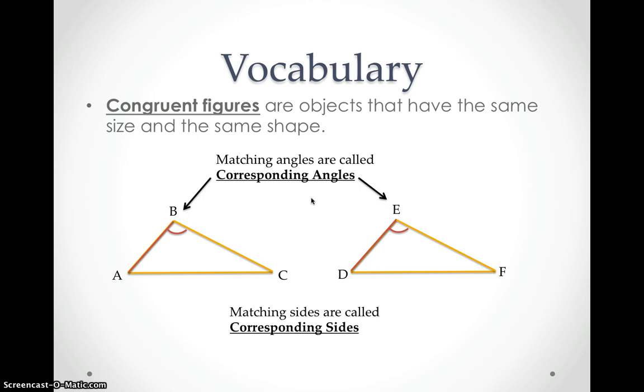So here I have color coded for you the corresponding sides on these two figures. Now, one quick thing to say about congruent figures is in these examples, you're always going to see the shape, these two shapes, but these two shapes don't necessarily have to be facing the same direction. They could be a reflection of one another. One could be rotated.